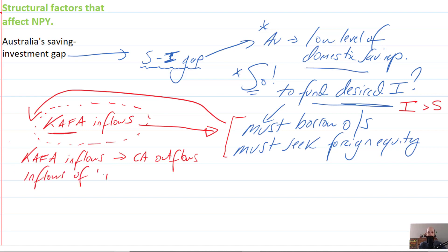So the inflows of investment that we're talking about will lead to NPY outflows. So for example, foreign debt - Australians are going to have to pay back interest. For foreign investment, it might have to be dividends, profits, or rent.